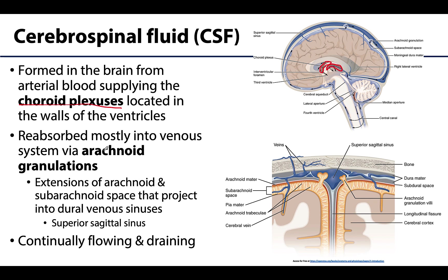Reabsorption is made possible by arachnoid granulations, also called arachnoid villi in younger individuals. These are extensions of the subarachnoid space that project into the dural venous sinuses, allowing CSF to drain into and be reabsorbed by the venous sinuses. Arachnoid granulations are associated with quite a few dural venous sinuses, but are most frequent and most easily observable in association with the superior sagittal sinus — the sinus running along the superior portion of the falx cerebri.